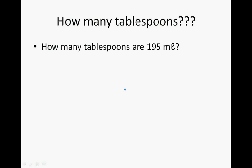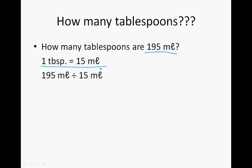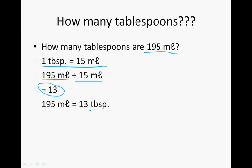How many tablespoons are in 195 milliliters? Now, 1 tablespoon is 15 milliliters, so we take the 195 milliliters and divide it by 15, and that gives us 13. So 195 milliliters is equal to 13 tablespoons.